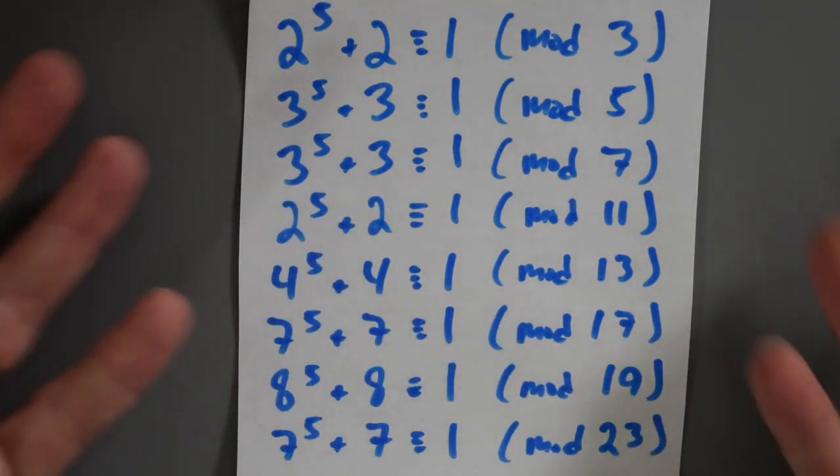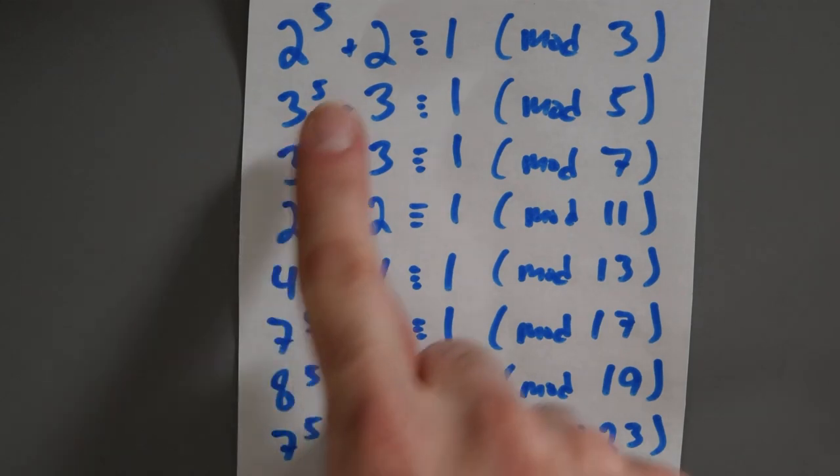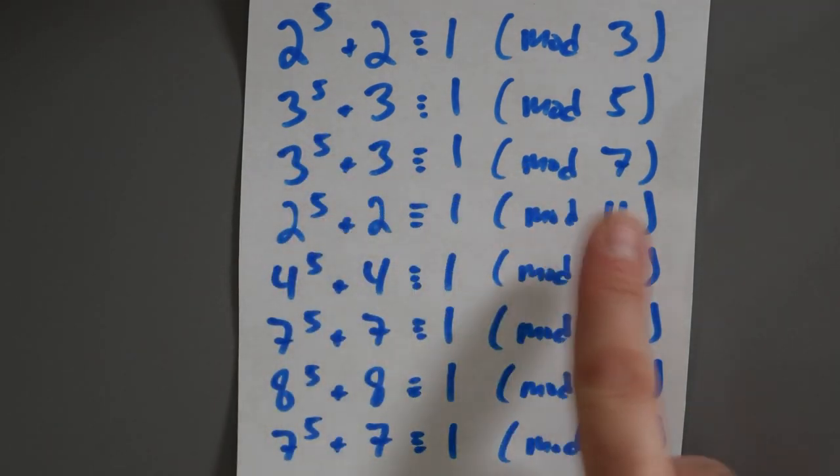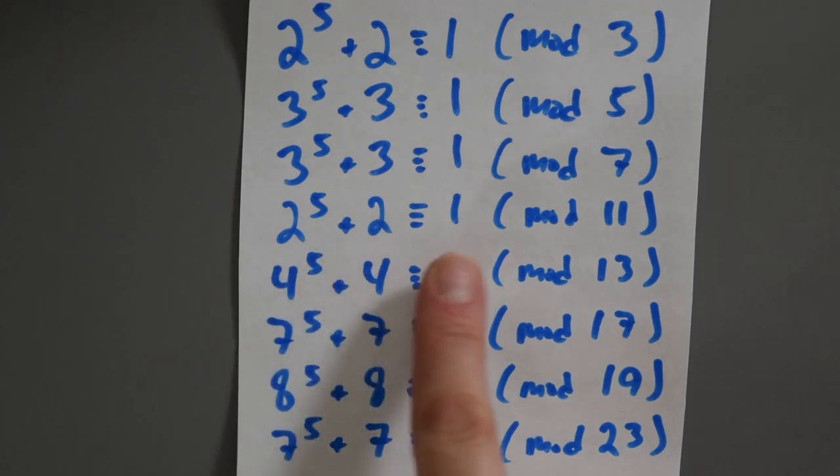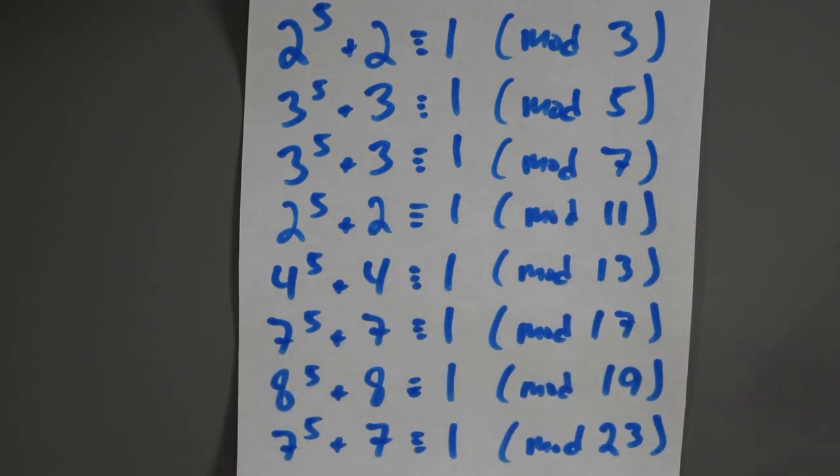Here's the result of some numerical exploration. Two to the fifth plus two is one modulo three. Three to the fifth plus three is one modulo five. Three to the fifth plus three is also one mod seven. Two to the fifth plus two is one modulo 11. Four to the fifth plus four is one modulo 13. Seven to the fifth plus seven is one modulo 17 and so on. So when you're confronted with this kind of numerical evidence, what sort of patterns do you notice?